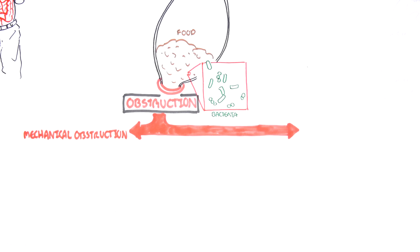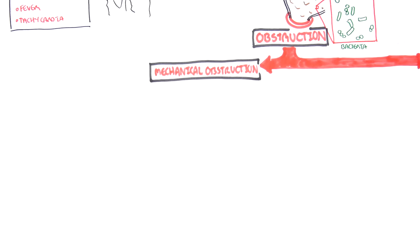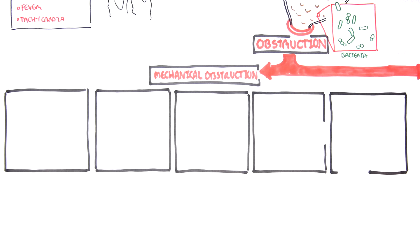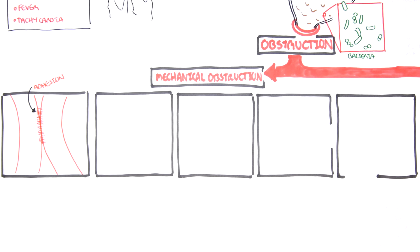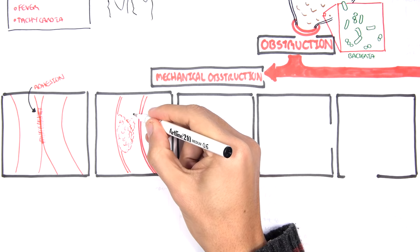Bowel obstruction can be categorized into a mechanical obstruction or a pseudo obstruction. Let's first focus on mechanical obstruction. There are five main types. The first and most common type is known as an adhesion, where two parts of the bowel are connected with each other by a sort of fibrous band. This is referred to as an adhesion and it can cause an obstruction.